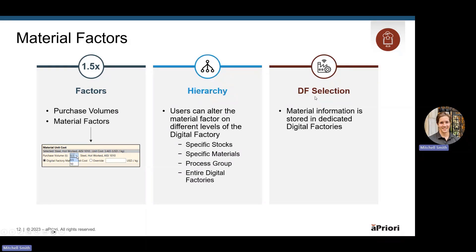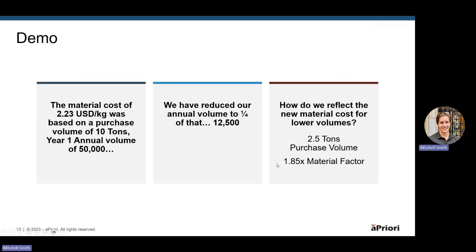Lastly, we have the digital factory selection. With that overlay structure, this is material information, so we'd actually be wanting to update this information in that same digital factory where we added our material. In this example, we had a material cost of $2.23 that was based off a purchase volume of 10 tons — that year one annual volume of 50,000. With our year two volume, we have reduced that to 12,500 — about a quarter of what our year one volume was. So without the supplier giving us that new material cost, we can still try to reflect that in Apriori using material factors. We are going to create a 2.5-ton purchase volume since we're reducing by a quarter, and we're going to apply a material factor of 1.85x of our $2.23.